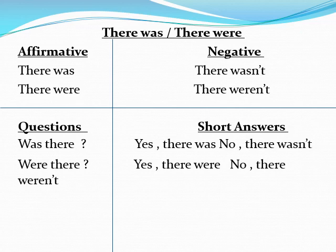The negative form is 'there wasn't', 'there weren't'. For questions, just put 'was' before 'there'. For example: was there? Were there? To answer: yes, there was. Or no, there wasn't. Yes, there were. Or no, there weren't.